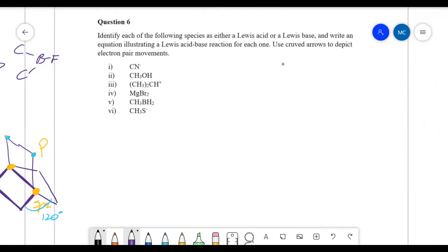Question six was identify each of the following species as either a Lewis acid or a Lewis base, and write an equation illustrating a Lewis acid base reaction for each one. Use curved arrows to depict electron movements. By the way, I didn't ask you, how were the exams? How did you find them? Inorganic was really a weird one. Overall it was okay. Inorganic was the only one which was like a really weird paper.